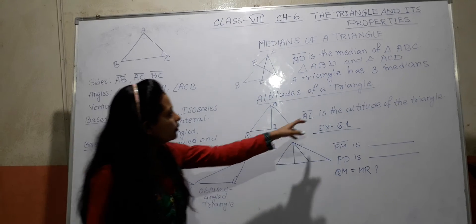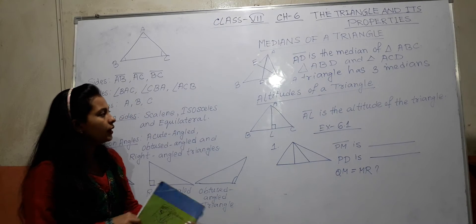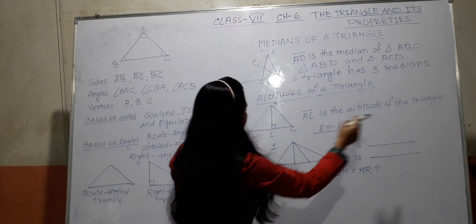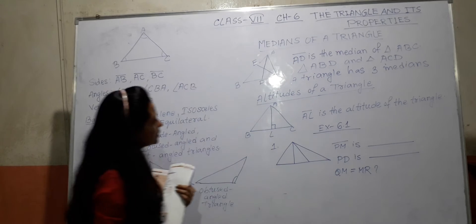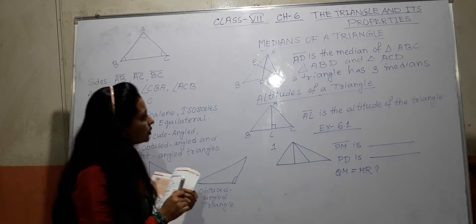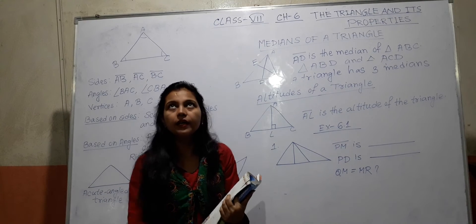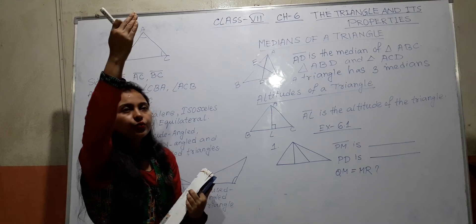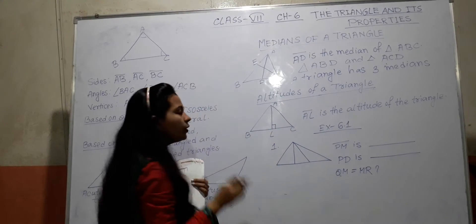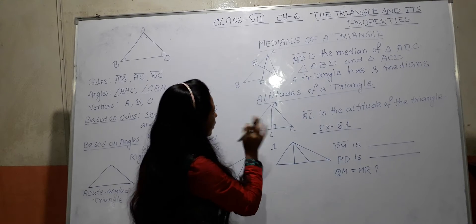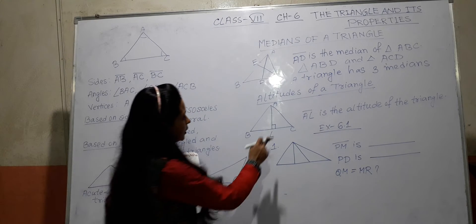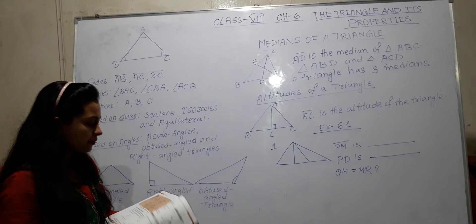Next, altitudes of a triangle. Altitudes means perpendicular line. See here, AL is the altitude of the triangle. Means AL makes 90 degree angle on the line BC. Altitude means how tall is it? Like from your floor to roof, distance, this is the altitude. For a triangle, altitude is the height.